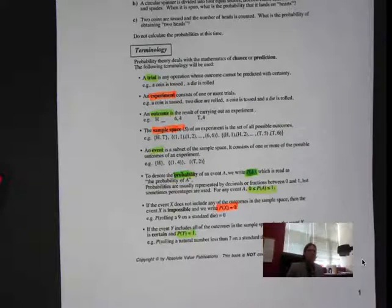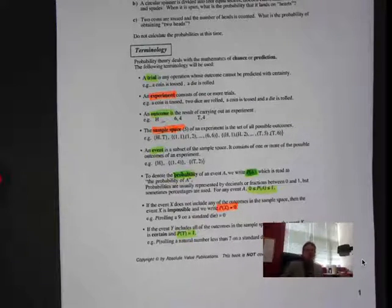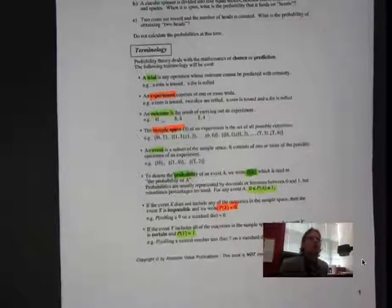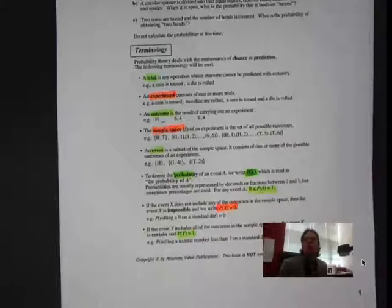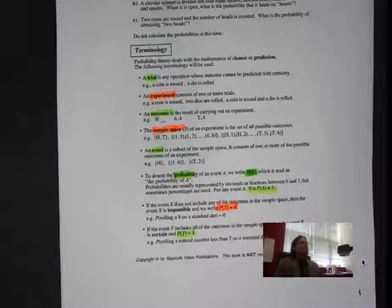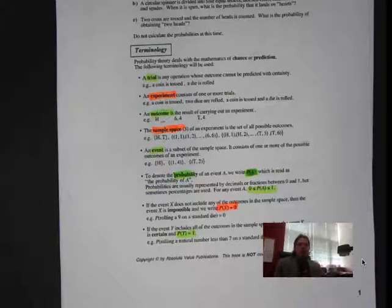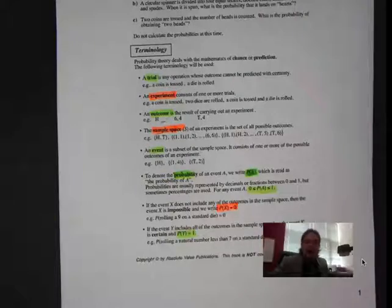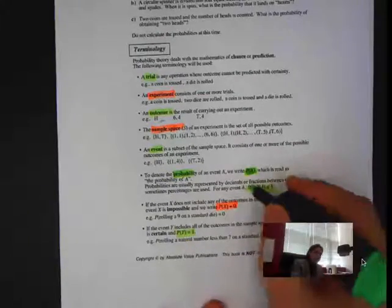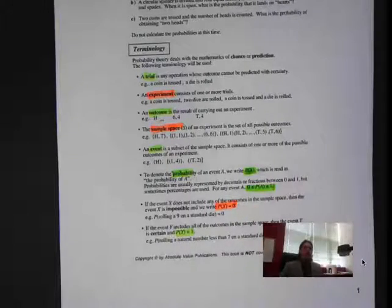What is the probability of getting zero? That means it cannot happen. Can we have less than zero? It's impossible — the lowest you can get is zero. Can you ever be more than 100%? No, 100% is a guaranteed win. There is no more than a guarantee, which is 100%. So our probability must be between zero and one. We can't have a negative and we can't be over 100%.